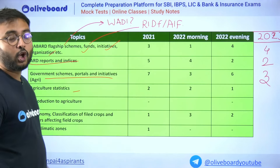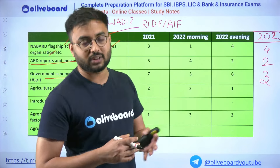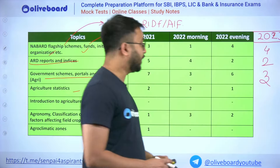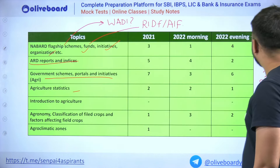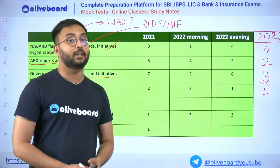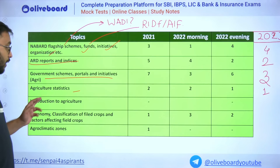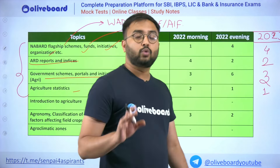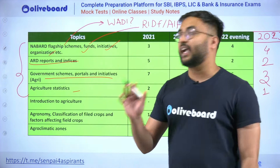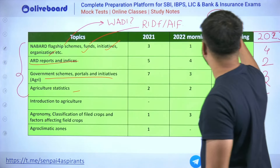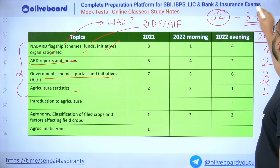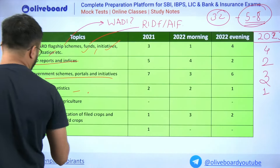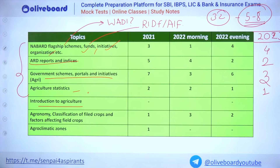Agricultural statistics: in 2021, a question was asked about the contribution of agriculture and allied sectors in percentage to GVA. In 2023, one question was related specifically to animal husbandry statistics. Out of 40 questions, you can expect 5 to 8 questions from current affairs, meaning 32 questions will be static. Now let's look at the important static syllabus chapters. Introduction to agriculture and basic understanding of agricultural development — zero questions, not a very important chapter.